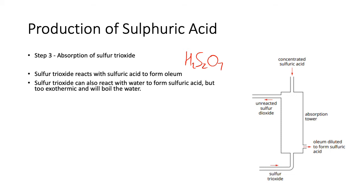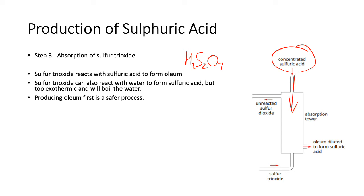You could just put sulfur trioxide with water and it would form sulfuric acid, but that reaction is very, very, very exothermic. As soon as you put the sulfur trioxide into water, the water starts to boil, turns into a mist of sulfuric acid, which is bad. That's a green chemistry principle — making sure your processes are safe. Producing oleum first is a safer process: you take some sulfuric acid prepared beforehand, drop it in one way, sulfur trioxide comes in the other way, they meet and form oleum, which is a liquid that can be removed from the tower.